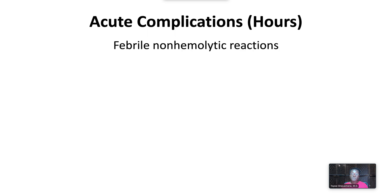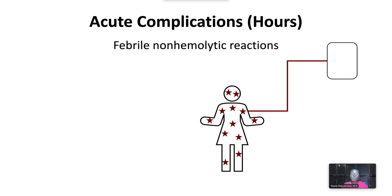Next, we'll address acute complications that occur within hours of transfusion. Febrile non-hemolytic transfusion reactions are mediated by pro-inflammatory cytokines produced by donor leukocytes during storage. Once transfused, the cytokines cause an inflammatory syndrome characterized by fever or chills and rigors, even in the absence of a fever. The DAT is negative. To significantly decrease febrile non-hemolytic transfusion reaction rates, blood products undergo leukoreduction.